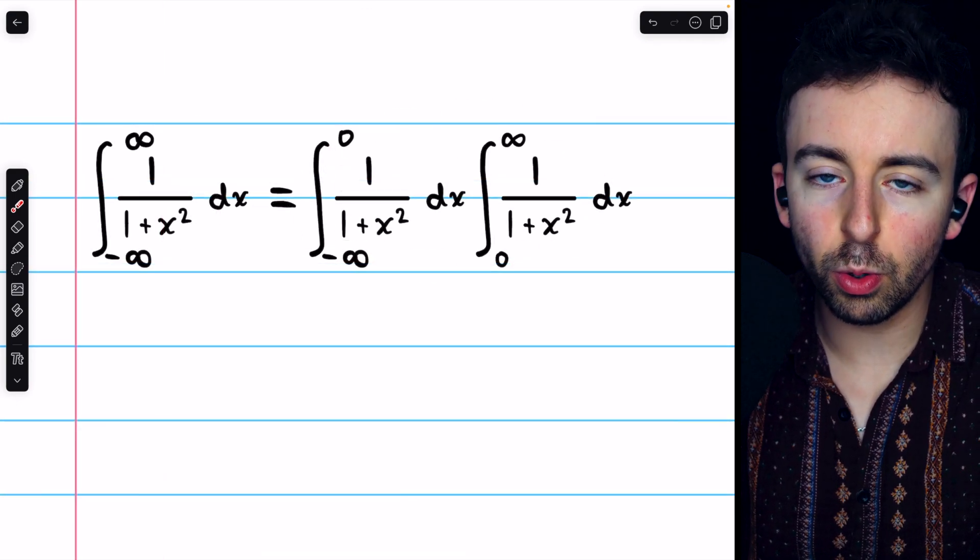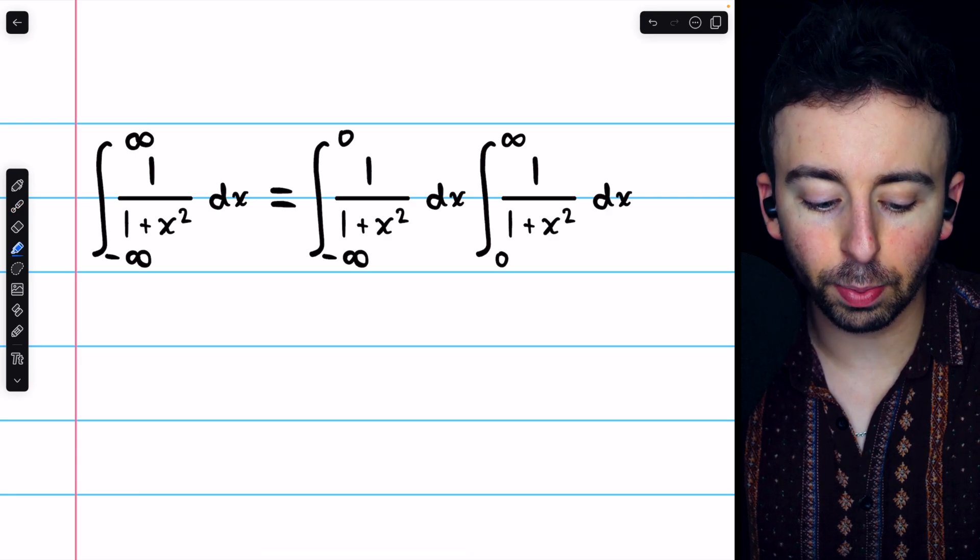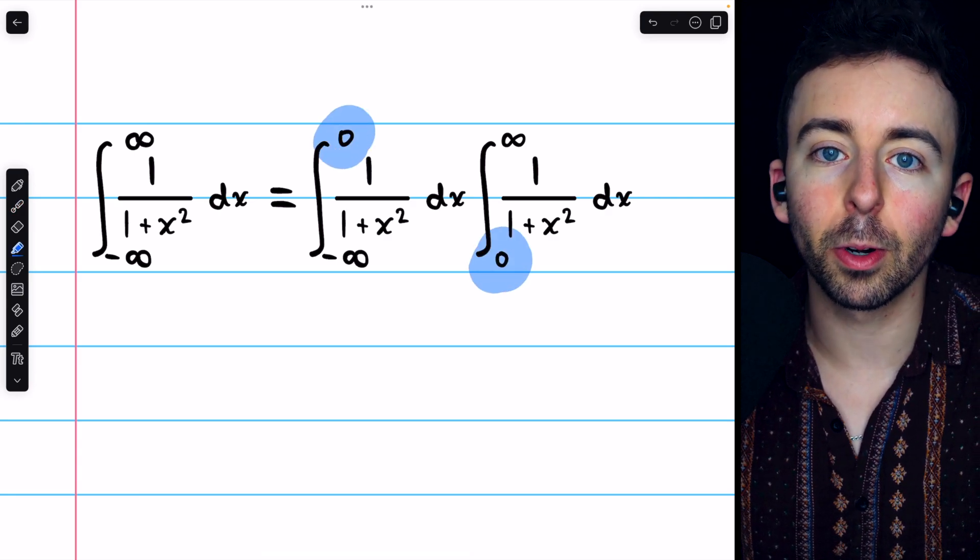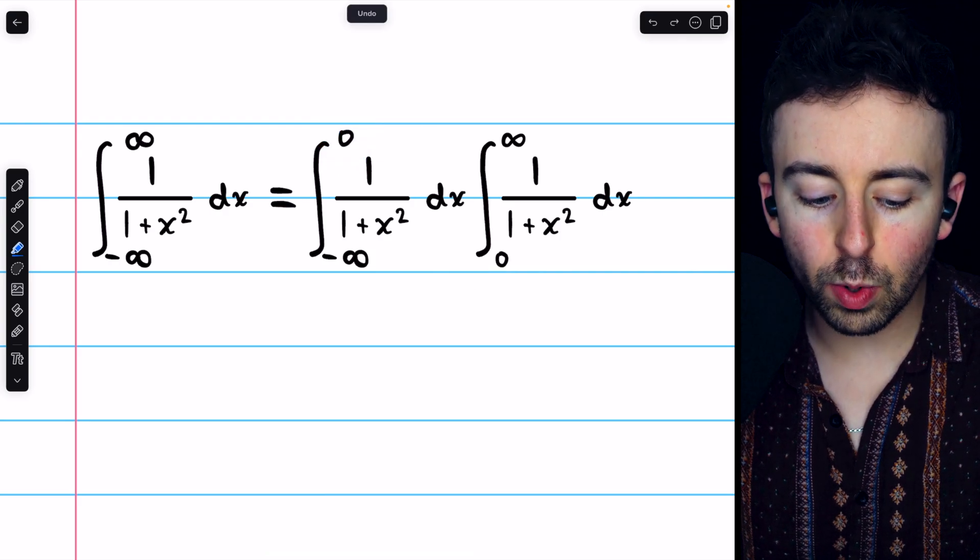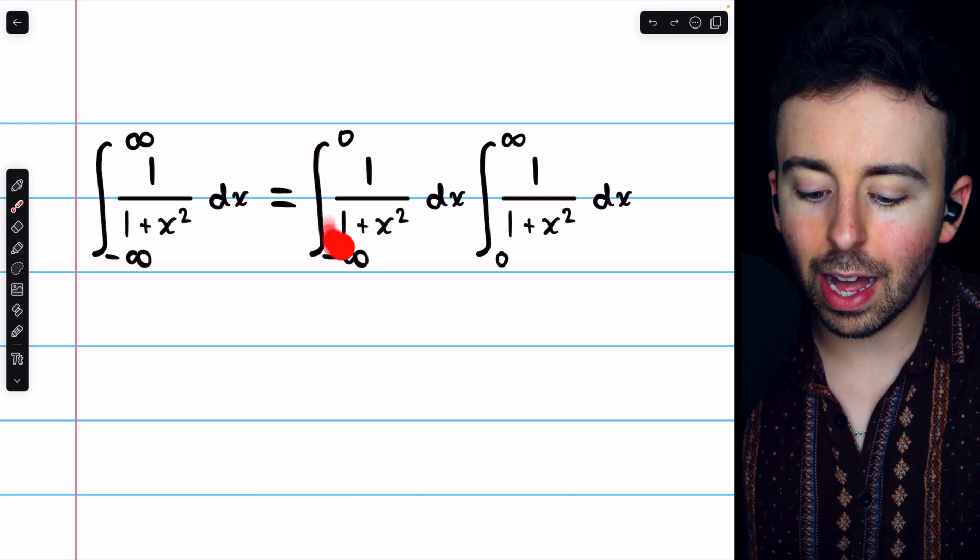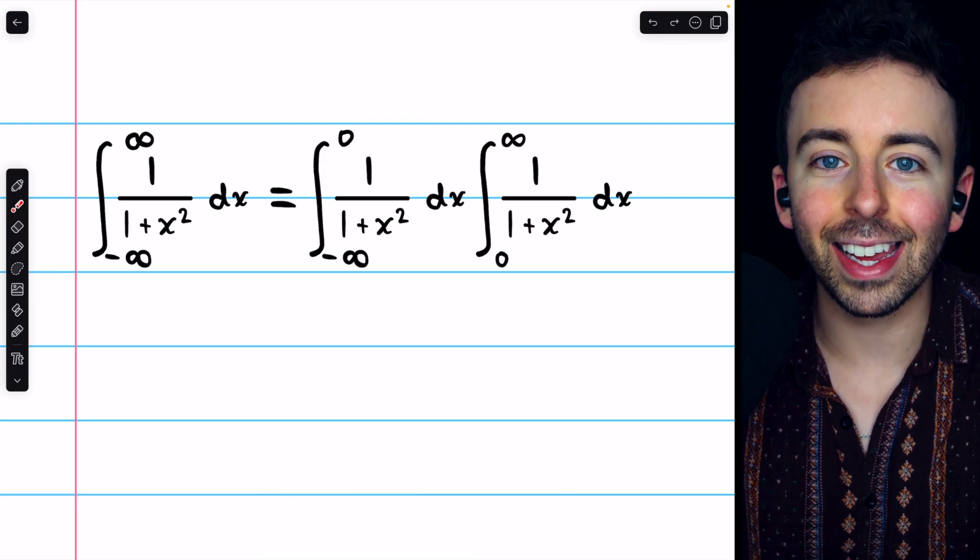That looks like this. We could choose any real number we like to split the integral at, but there's no reason not to choose a nice easy number like 0. Now, we have two improper integrals of what we call type 1, and we can evaluate both of these by taking limits.